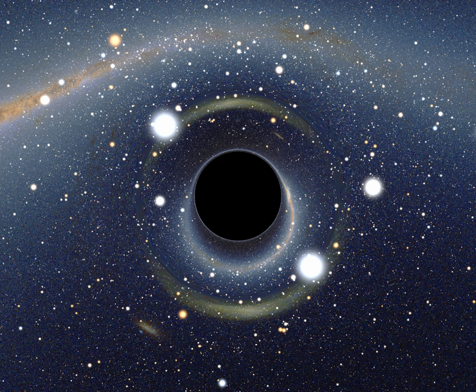Disappearing event horizons exist in the Kerr metric, which is a spinning black hole in a vacuum. Specifically, if the angular momentum is high enough, the event horizons could disappear.